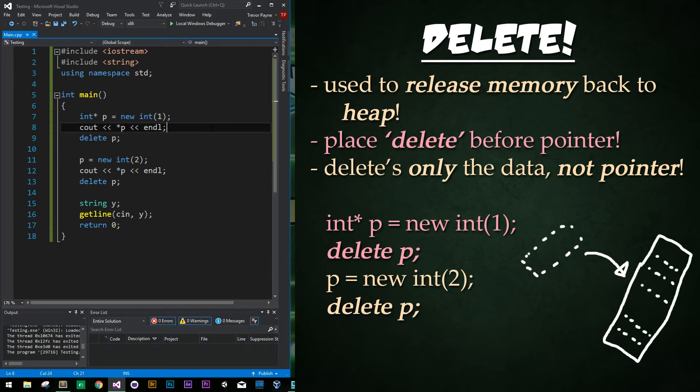Delete is super simple to use. Just place it before the pointer in memory you wish to release back to the heap. Note that this does not delete the pointer because the pointer is created on the stack. Delete only deletes the value at the pointer's address and here we've added the keyword delete and our pointer to delete this new instance of 1 up above that we created and then we just paste that down below as well to remove this newly created int 2 here. And that leads to very clean memory management.